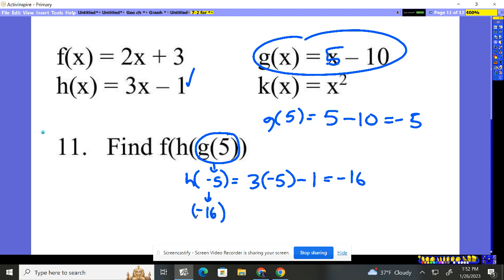And we'll plug negative 16 into, finally, the f function. Here's my f function. 2 times whatever they give you, negative 16, and then add 3. 2 times negative 16, negative 32. Negative 32 plus 3 is negative 29. And that is our final answer.